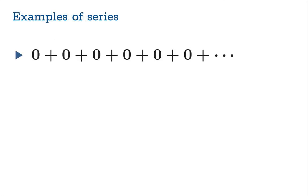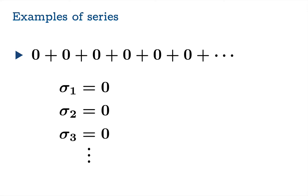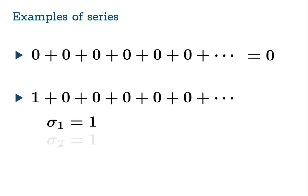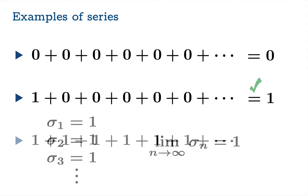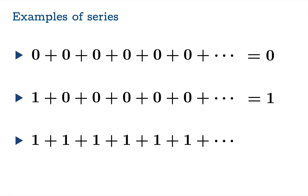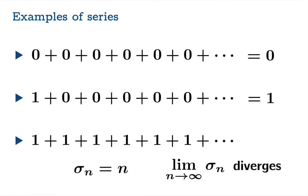Now let's come full circle and look at those original series where we guessed the behavior. For the all-zeros series, the sequence of partial sums is all zeros — the limiting value is zero, so indeed this series converges to zero. Similarly, for the series starting with one then adding zeros, all partial sums equal one, converging to one. And for the series where each term is one, the nth partial sum equals n, and the limit diverges to infinity. So yes, this series diverges to infinity — exactly the behavior we expected.